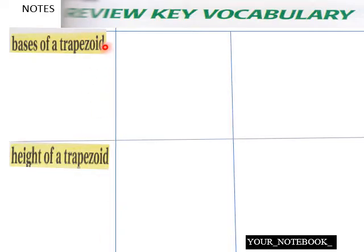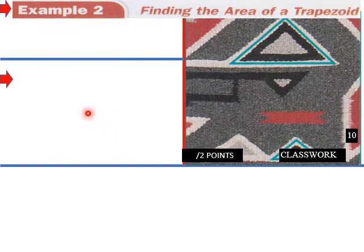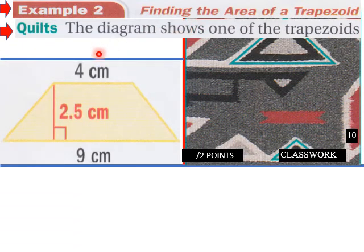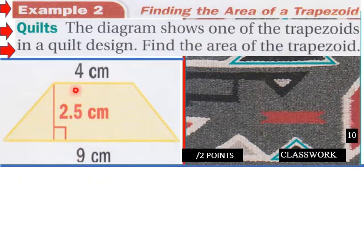Okay students in your own words. Define bases of a trapezoid and define height of a trapezoid. And that goes in your notebook. Let's go into example two. Find an area of a trapezoid. A diagram shows one of the trapezoids. So we have a trapezoid here. Here's one base. Here's the other base.